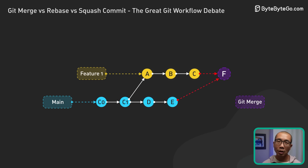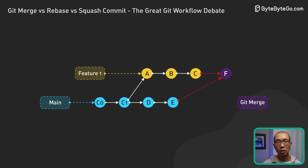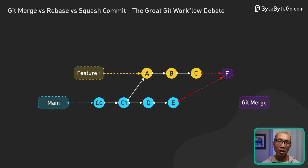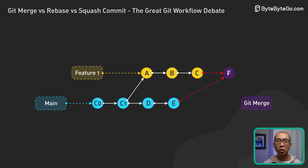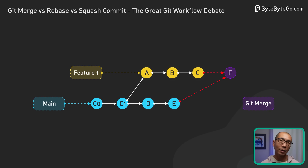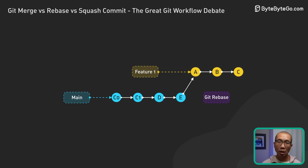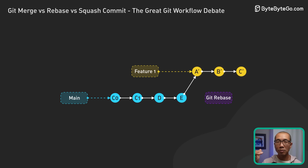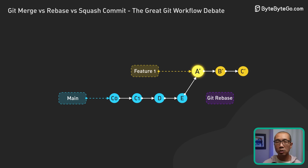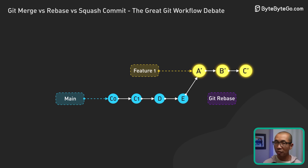Git merge pulls in the latest changes from main into the feature branch, creating a new merge commit in the process — it's like tying the two branches together with a knot. Git rebase changes the base of a feature branch to the latest commit on main and then replaces our changes from there, giving us a clean, straightforward commit history, which many people prefer.